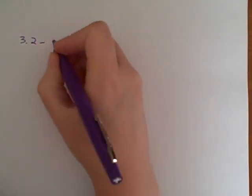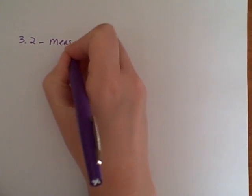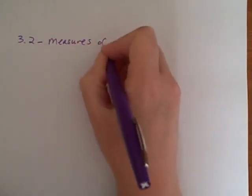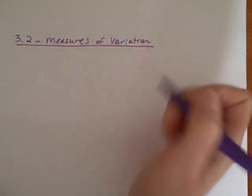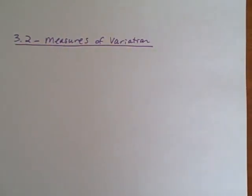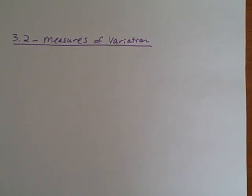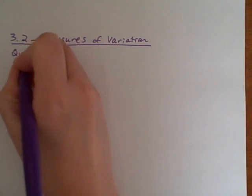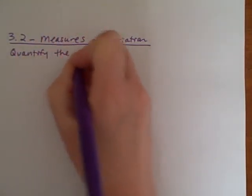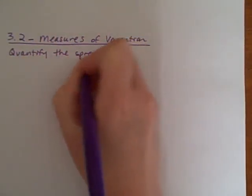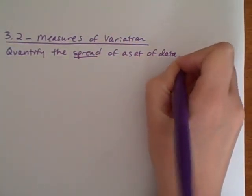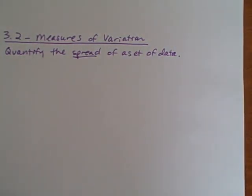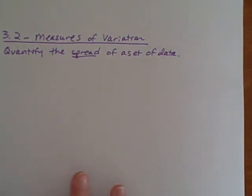From section 3.2, there are a couple of things I want you to be able to get when we're talking about measures of variation. Basically, the idea is that we want to be able to quantify how spread out a data set is - we want to quantify the spread of a set of data.